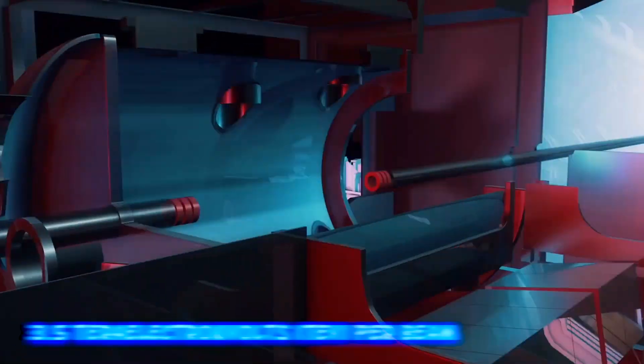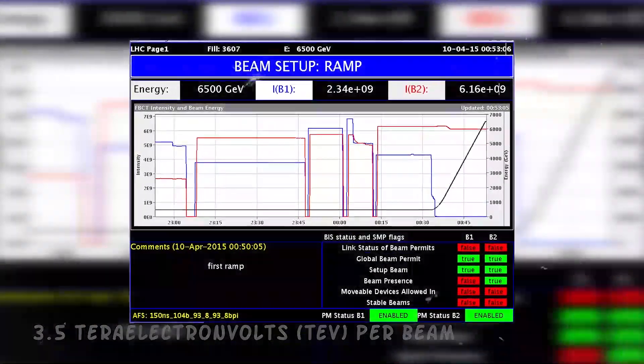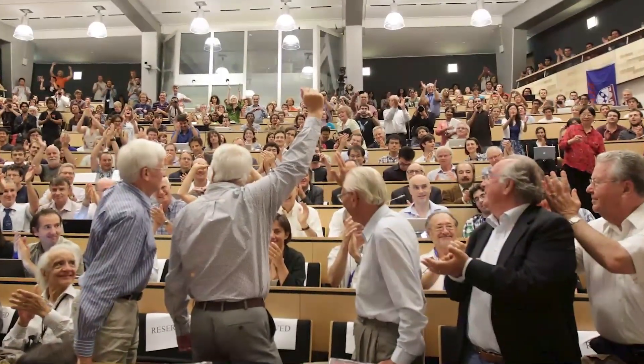The first collisions were achieved in 2010 at an energy of 3.5 tera electron volts (TeV) per beam, about four times the previous world record. The discovery of the Higgs boson at the LHC was announced in 2012.